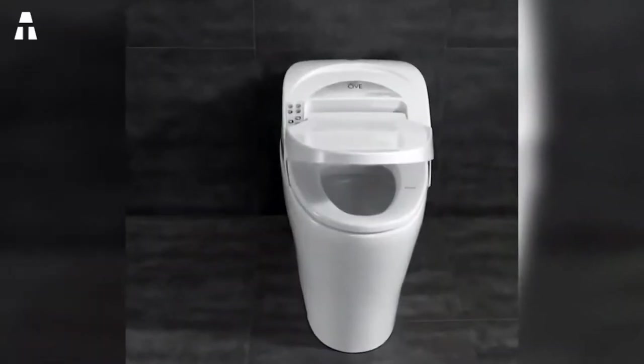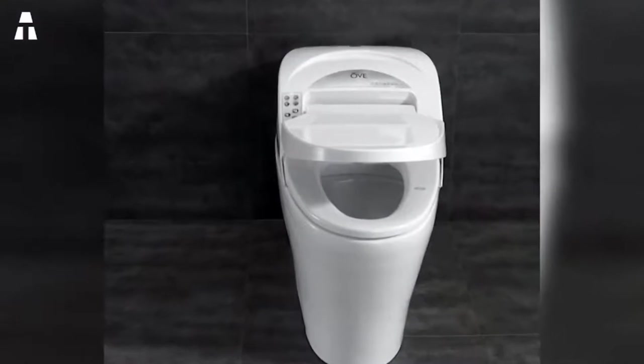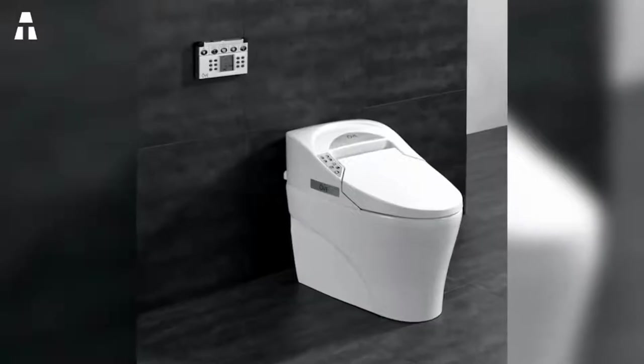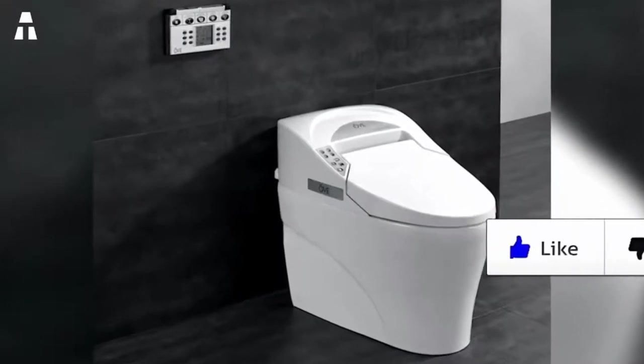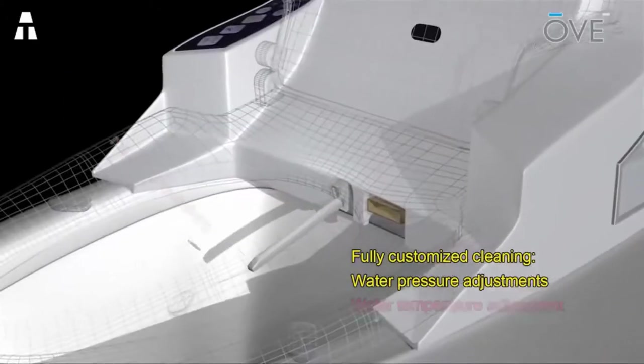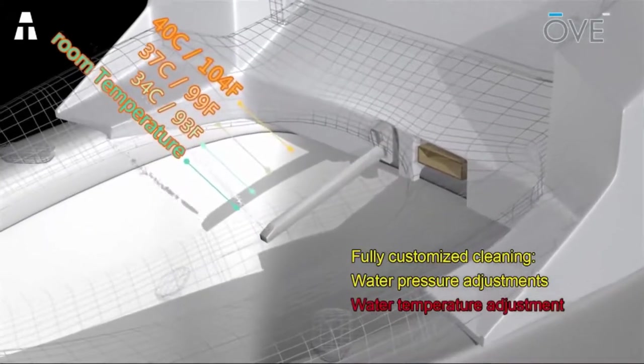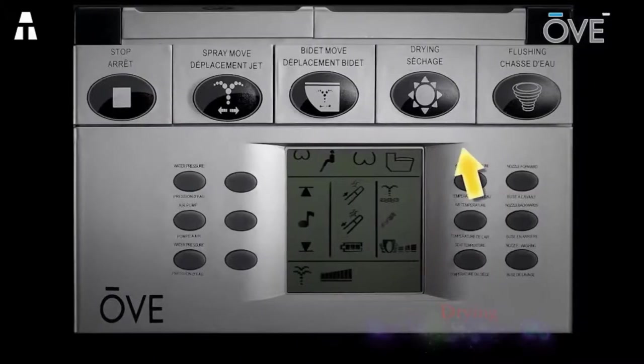To get maximum pressure without using too much water, OVE thought of using an aerated spray mode. And because there is no such thing as saving too much money, OVE has included an eco mode that allows you to significantly reduce electricity consumption when the toilet is not in use.